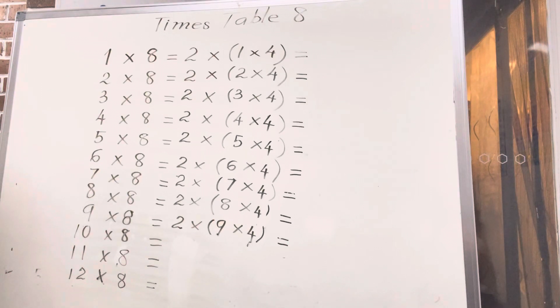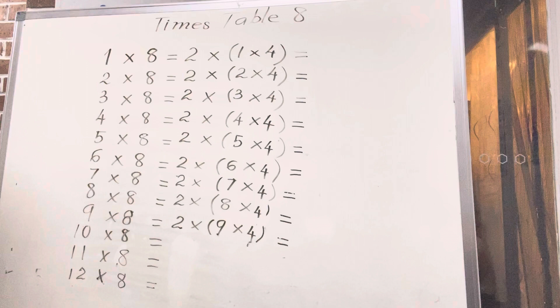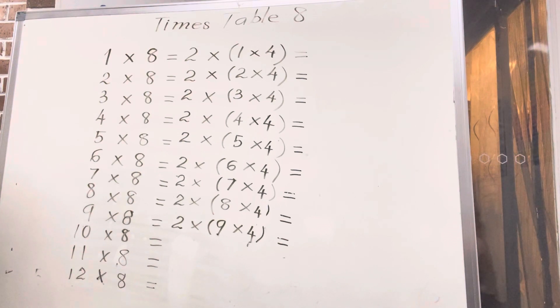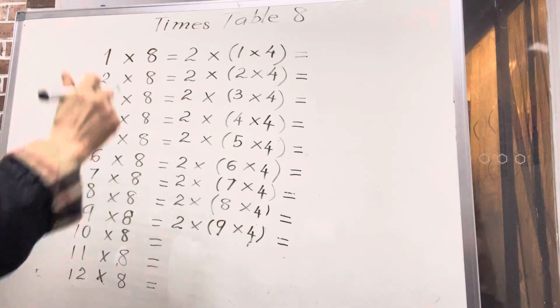How we do times table 8? You can use times table 4 to work out times table 8. How do we do that? We just double times table 4 to get times table 8. Are you ready? Yes. So one times eight equals eight.